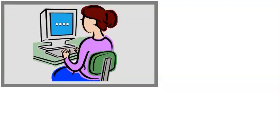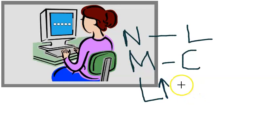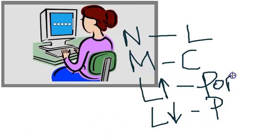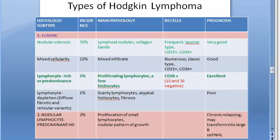To recap: nodular sclerosis — lacunar Reed-Sternberg cell; mixed cellularity — classic Reed-Sternberg cell; lymphocyte predominant/rich — popcorn Reed-Sternberg cell; lymphocyte depleted — pleomorphic Reed-Sternberg cell. Popcorn type means lymphocytes are abundant and prognosis is very good. That concludes the types of Hodgkin lymphoma and types of Reed-Sternberg cells.